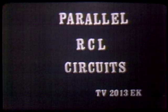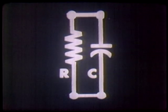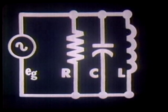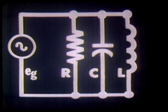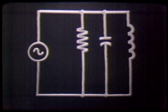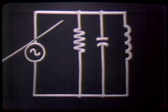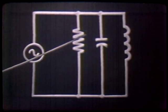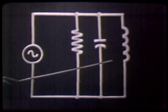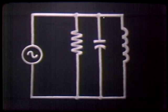Parallel RCL Parallel Circuits. As the title implies, we could take a resistor, a capacitor, and an inductor in parallel across a voltage source. Here we have a parallel RCL circuit. Following the rules for any parallel circuit, we know that the voltage across each component is the same as the source voltage. The resistor voltage, the capacitor voltage, and the inductor voltage would all be the same as the source voltage.